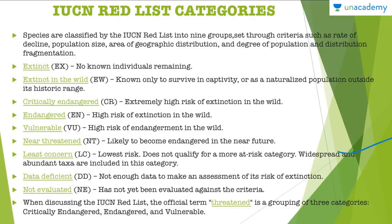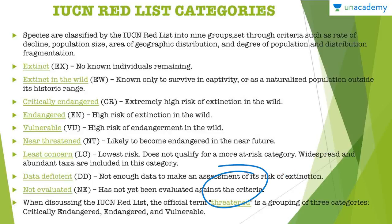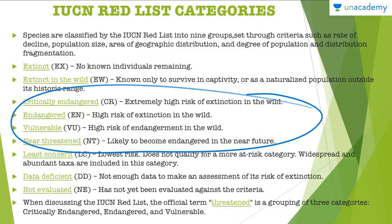Least Concern means a lot of individuals of the species are present, so there is no immediate threat. Data Deficient means there is not enough data to make an assessment of its risk of extinction. Not Evaluated means the species has not been evaluated against the criteria — no particular study has been done. Importantly, when discussing the IUCN Red List, the official term 'Threatened' is a grouping of three categories: Critically Endangered, Endangered, and Vulnerable. All species falling into these three categories are regarded as threatened.